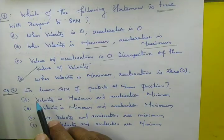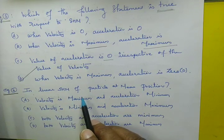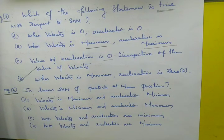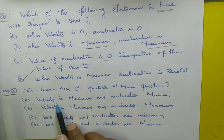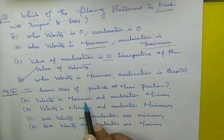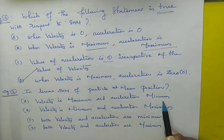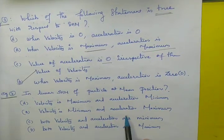In linear SHM of a particle at the mean position, velocity is maximum and acceleration is minimum.